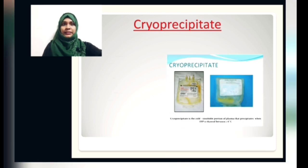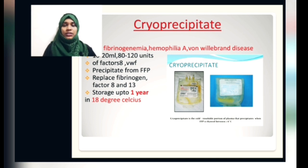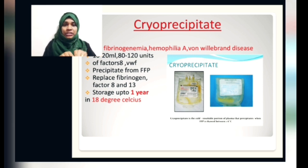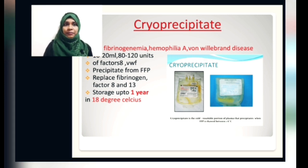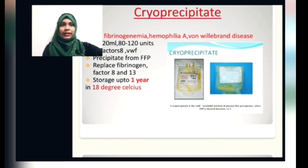Cryoprecipitate is the product extracted from FFP. It is most commonly given for low fibrinogen count, hemophilia A, and von Willebrand disease. Von Willebrand factor works in conjunction with factor 8, so cryoprecipitate is indicated for deficiency of von Willebrand factor, hemophilia A, or factor 8 deficiency. It should be stored at minus 18 degree Celsius and is viable for up to one year.